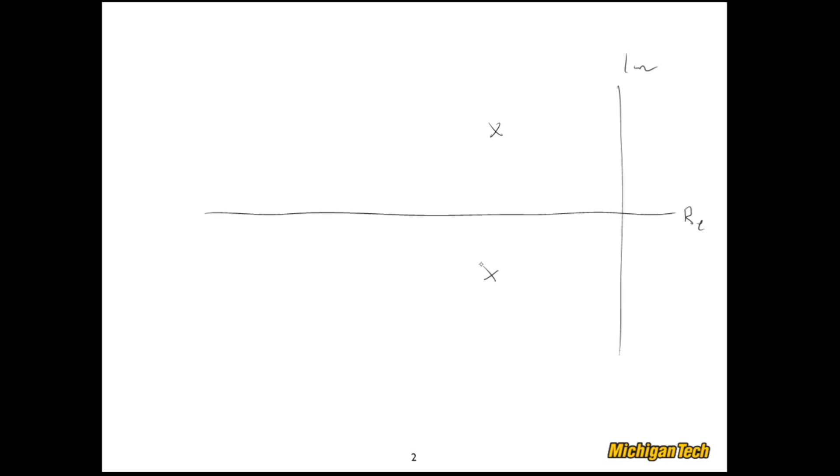There we go, and what we'll do is make some lines in here for constant values of things like settling time, rise time, percent overshoot, etc.